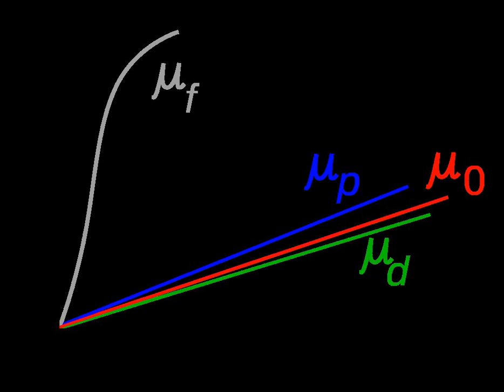In SI units, permeability is measured in henries per meter, or equivalently in newtons per ampere squared.